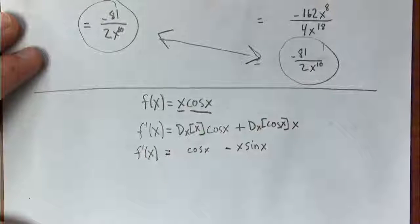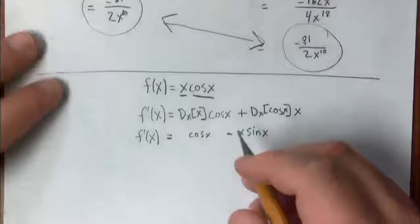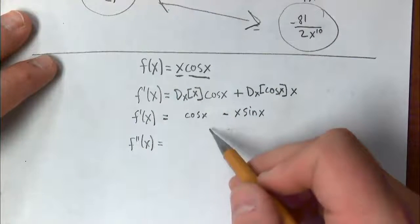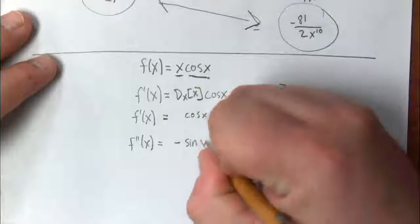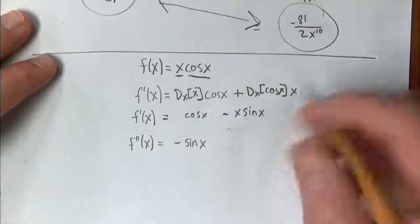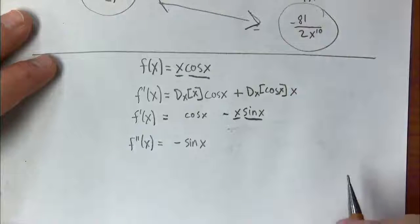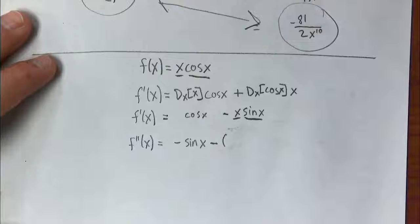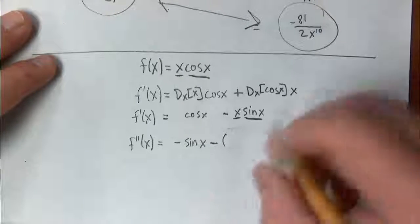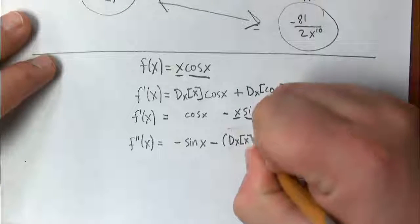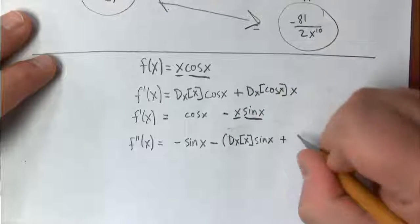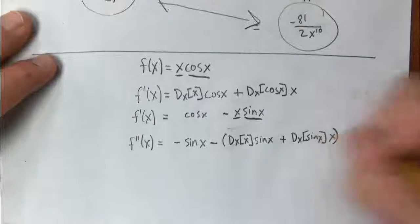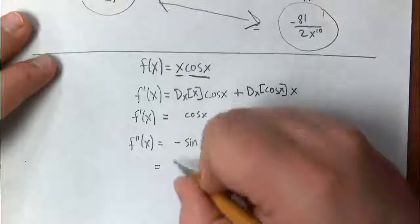If I want f double prime, I just take f prime and differentiate it. The derivative of cosine x is negative sine x. For the term negative x sine x, that's a product again — we have x and sine x — so we use the product rule. I'll leave the negative sign out front and apply the product rule in parentheses to x times sine x.